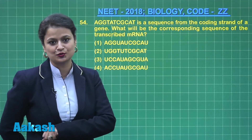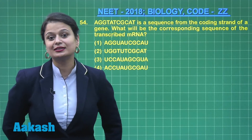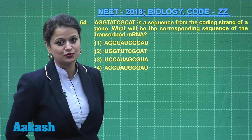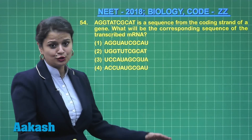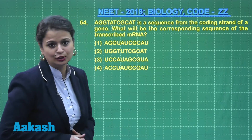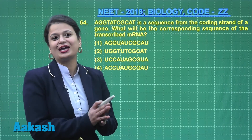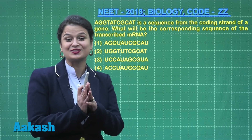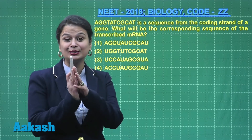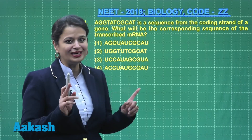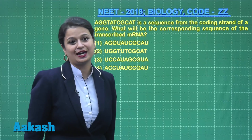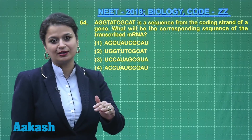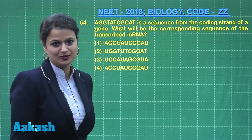The strand that participates in messenger RNA synthesis is known as the template strand, and the other strand is known as the coding strand or non-template strand. It should be very clear that the sequence of mRNA is not similar to the template strand — it is similar to the coding strand. The only difference is that on the messenger RNA, instead of thymine, there is uracil.